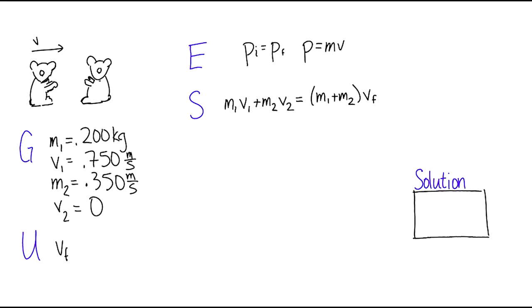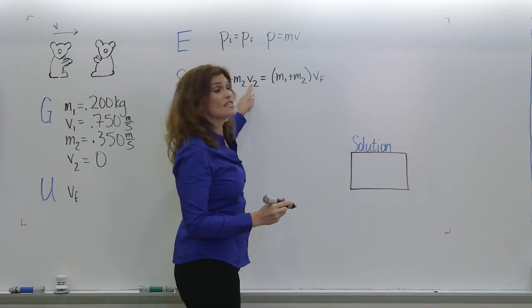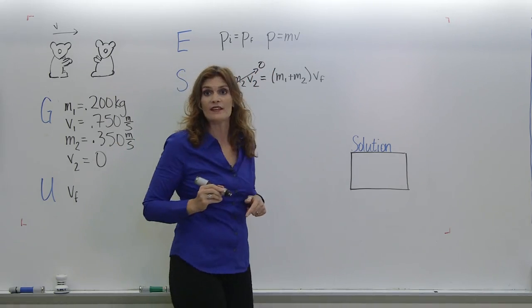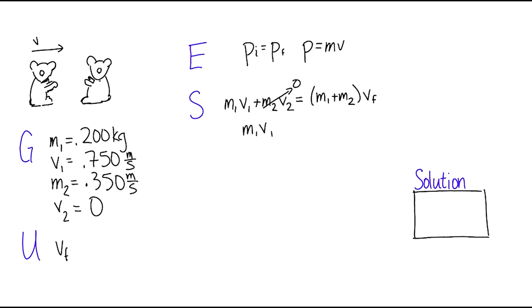But my favorite thing, we get to cross something out because it's 0. Since this velocity is 0, this whole thing goes away. So then we get that our final velocity is equal to m1v1 divided by m1 plus m2.